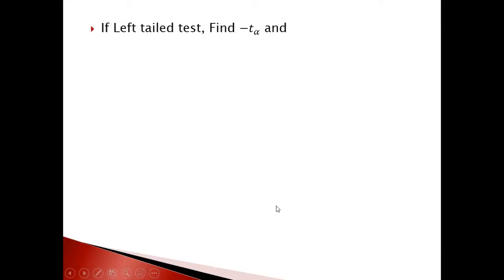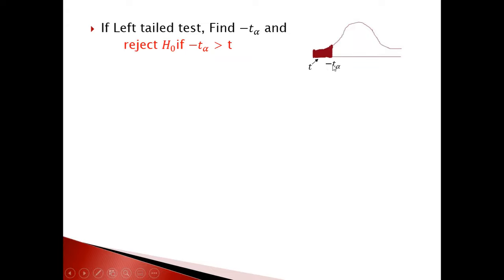For a left tail test, find negative t-alpha and reject H₀ if the test statistic t is less than negative t-alpha. As shown in the picture, if t falls in the rejection region to the left of negative t-alpha, we reject H₀.